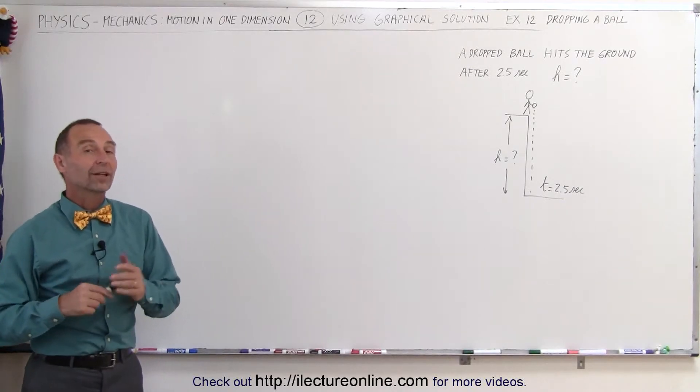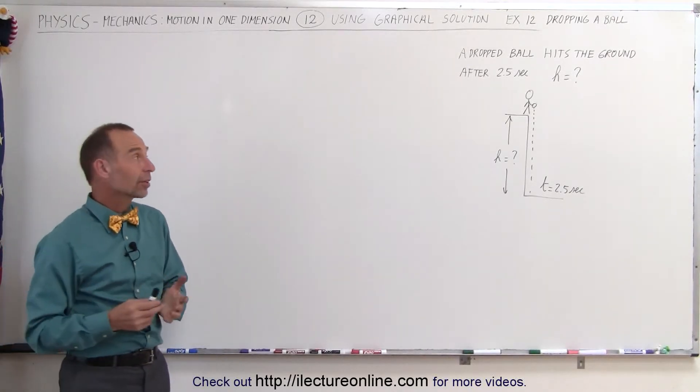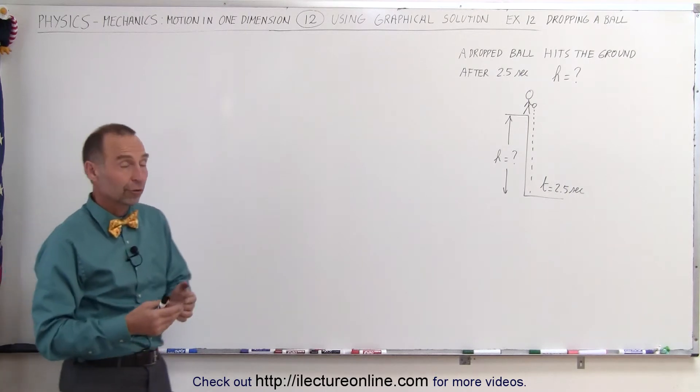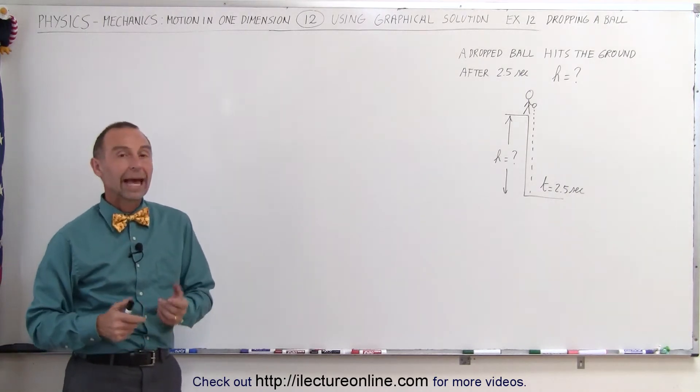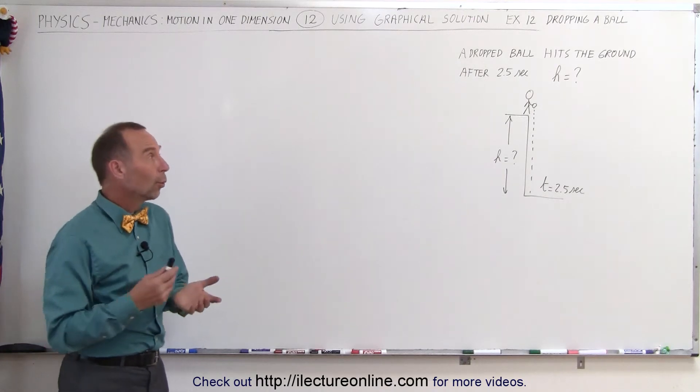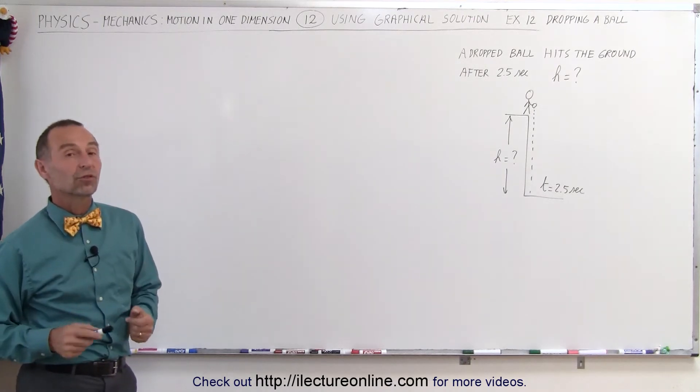Welcome to Electron Online and now let's try the technique on a falling object. Let's say we go to a certain cliff or a certain top of a building, we drop a ball, the ball hits the bottom after two and a half seconds. What is the height from which it was dropped?